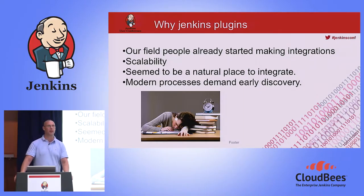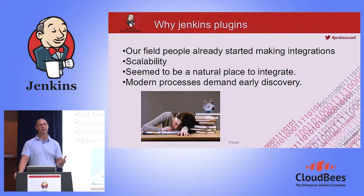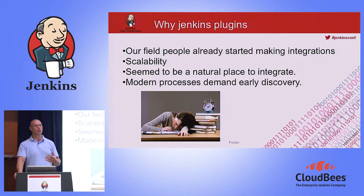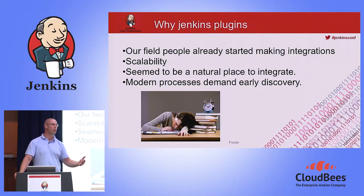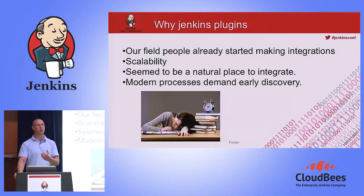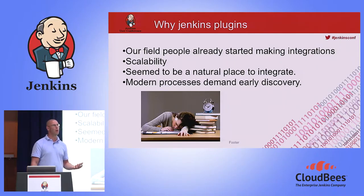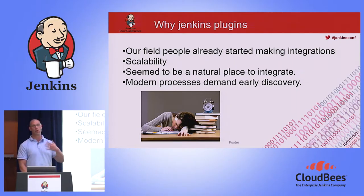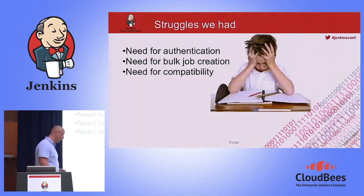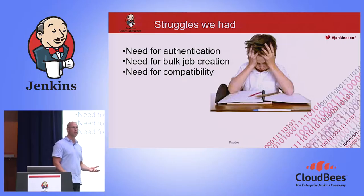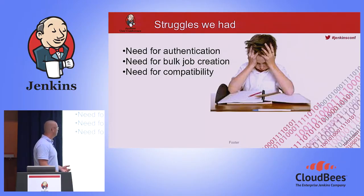One of the things we found is that with new processes like Scrum, you want to find things early on, not at a later stage. If you end up just before you release and you find an open source component that you really don't want to release, you have to fix that late. That's why we created the Jenkins plugin — so early in your software lifecycle, you can see what open sources you're using.